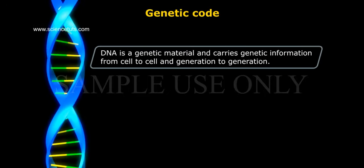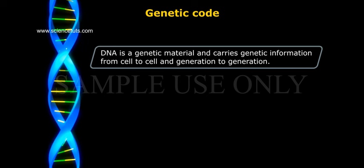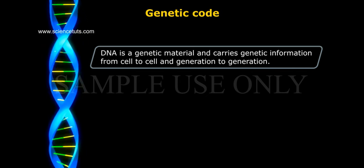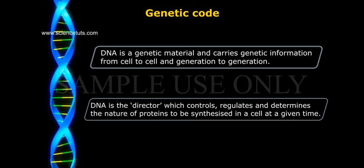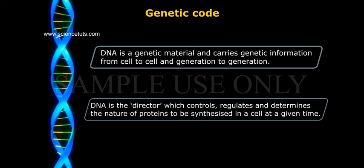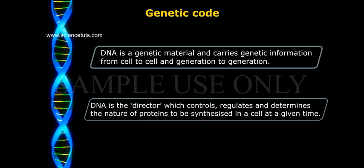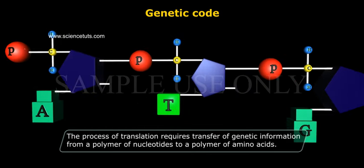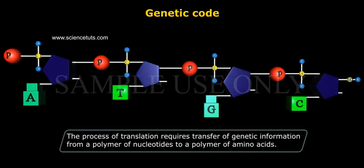Genetic Code. DNA is a genetic material and carries genetic information from cell to cell and generation to generation. DNA is the director, which controls, regulates and determines the nature of proteins to be synthesized in a cell at a given time. The process of translation requires transfer of genetic information from a polymer of nucleotides to a polymer of amino acids.